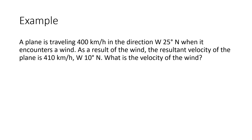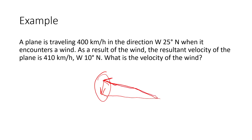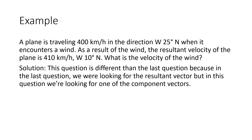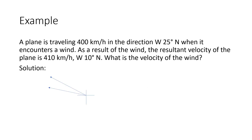This next question is perhaps a little tougher because we're asking for the component velocity of the wind. In other words, one of the components looks like this vector, and another component looks like this vector, and we're asking what is the direction and magnitude of the other component. This is different from the last one because in the last one we were looking for the resultant, but in this one we're looking for one of the components. A lot of times students find it a little bit more difficult.